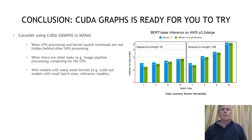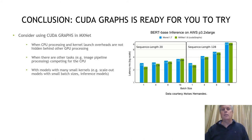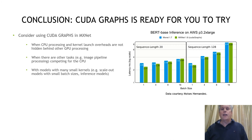To conclude: CUDA graphs is part of MXNet 1.8 and ready for you to try. Under what scenarios would you expect to see a benefit? Generally, those cases when CPU processing and launch overheads are affecting performance — for example, scale-out applications, or inference models with small batch size, or cases where the CPU is in demand for other tasks like an image pipeline. Also, as GPU power grows, kernel run times shrink for a fixed model size, putting more burden on the CPU to keep up and making CUDA graphs increasingly valuable for relief.